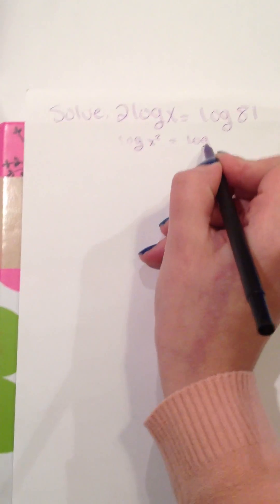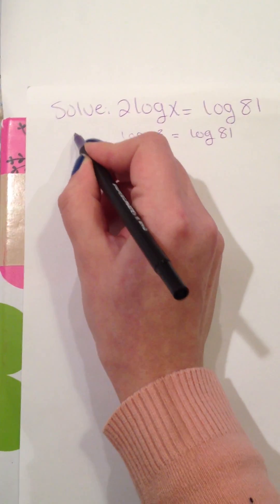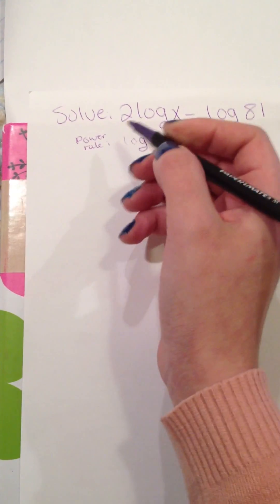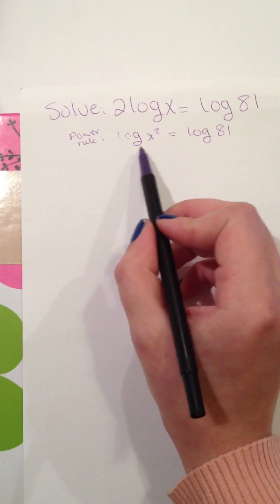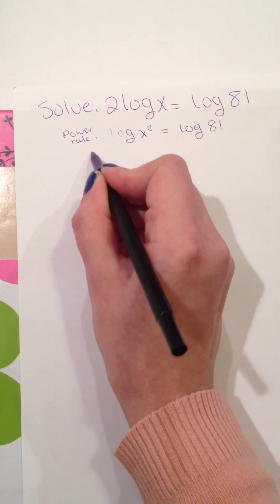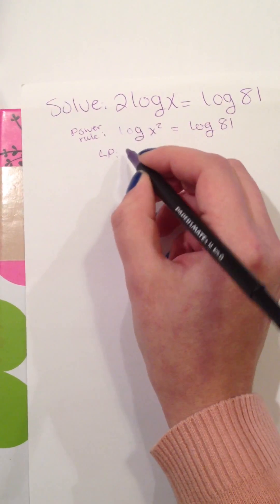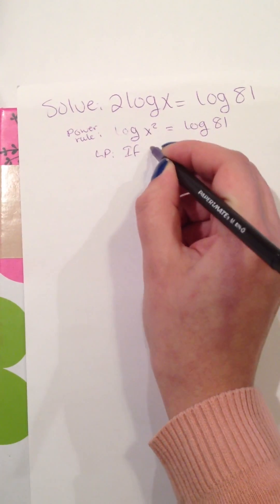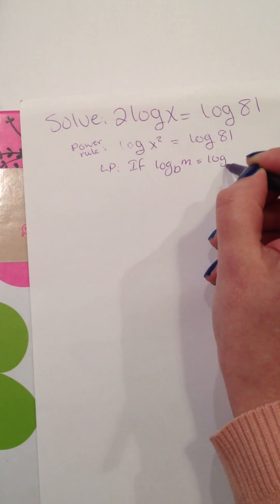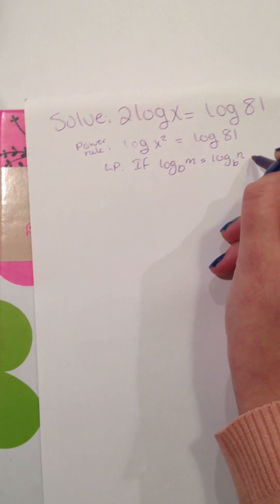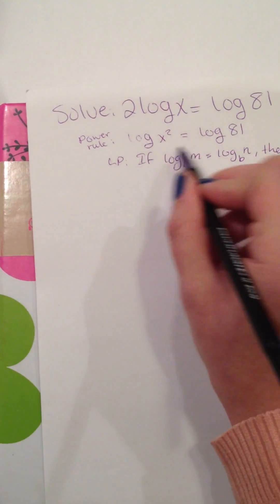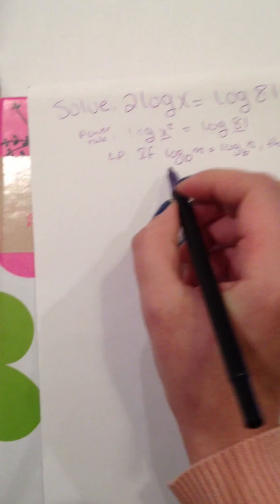This equals log(81). By the power rule and then by the log property, which states if log base b of m equals log base b of n, then m = n, so x² = 81.